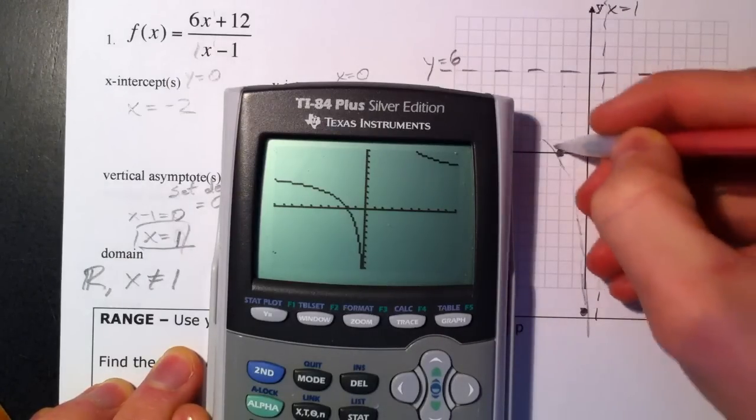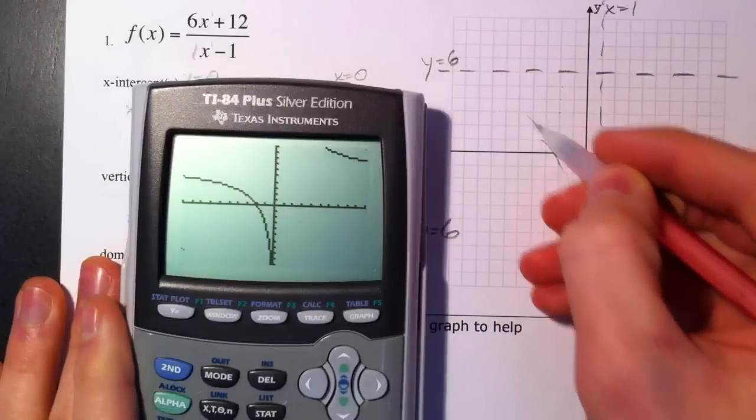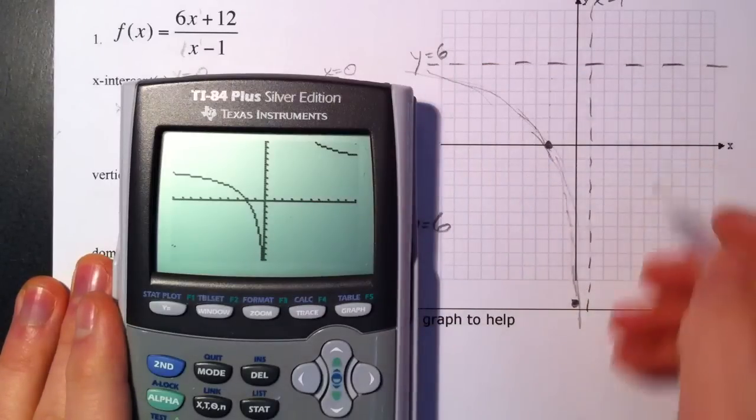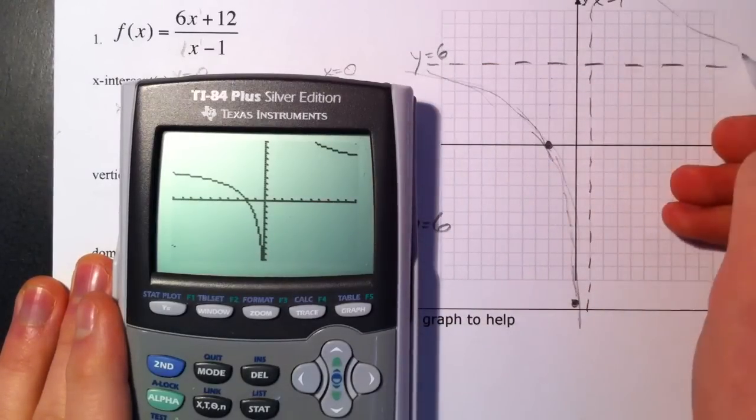And we're just going to use this to help us out. I'm going to graph this. It's going to go up here, use our asymptote up there to help us out. And we're going to use our asymptote up here to help us out as well. It's just going to do something like that.